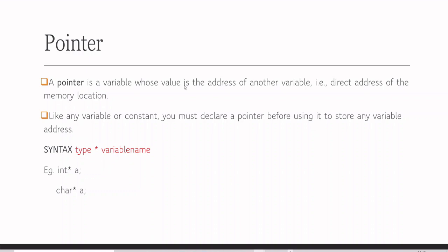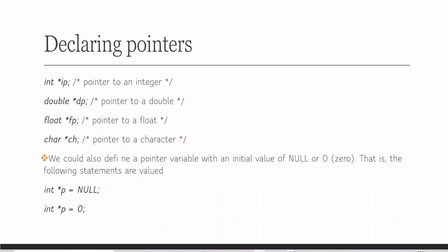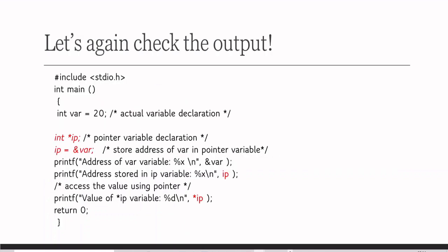A pointer is a variable whose value is the address of another variable — a direct address of a memory location. Like any variable, you must declare a pointer before using it. The syntax is: 'data_type *variable_name'. For example: 'int *ip', 'double *dp', 'float *fp', 'char *ch'. We can also define a pointer variable with an initial value of null — these are called null pointers. If you do not have an address to assign in the beginning, you can initialize with the null value.